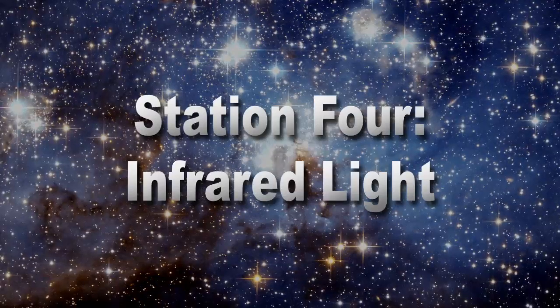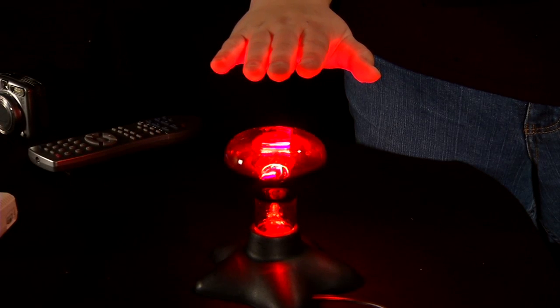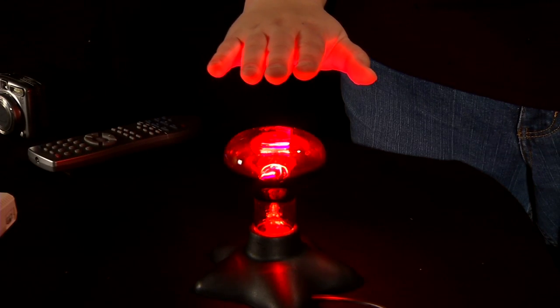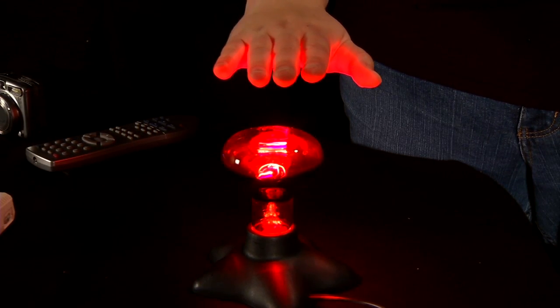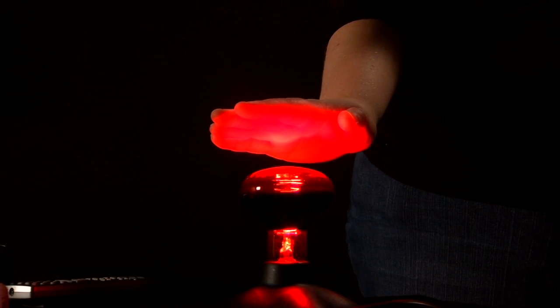The final station is also infrared light, but this time the source is a heat lamp. The detector in this case is our own skin, which will feel heat in the presence of this infrared light. Like with the ultraviolet station, remember that the red glow that you see is visible light, not infrared.